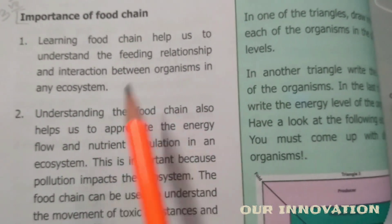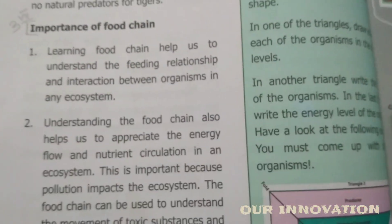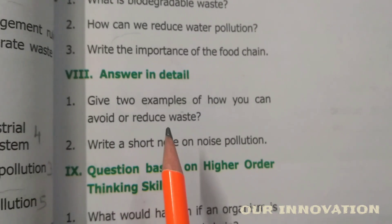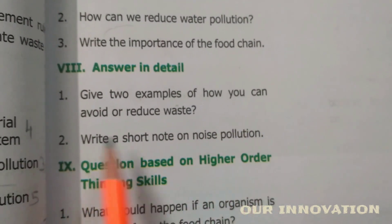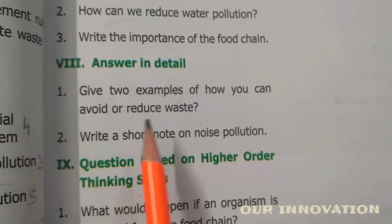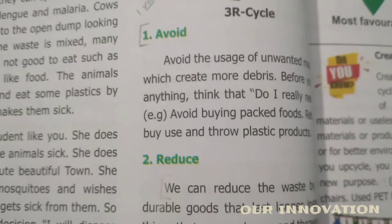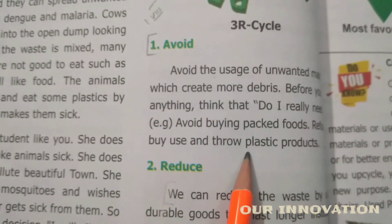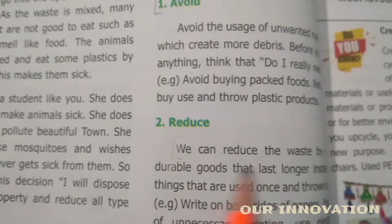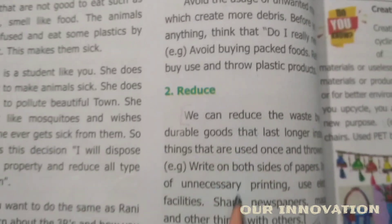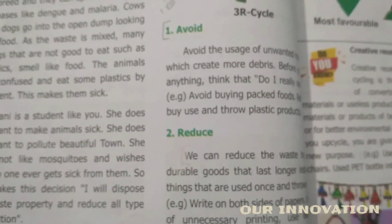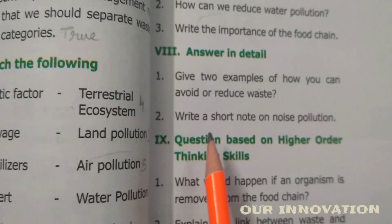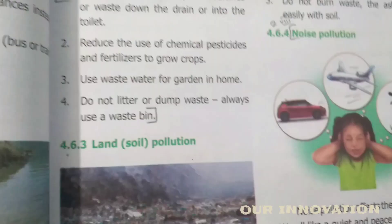Roman numeral eight — answer in detail. Give any two examples of how we can avoid or reduce waste. From page number 56, under the heading 'Avoid,' write all those points, and under the heading 'Reduce,' write the whole paragraph. These two paragraphs need to be written. Second question: write a short note on noise pollution, from page number 61.